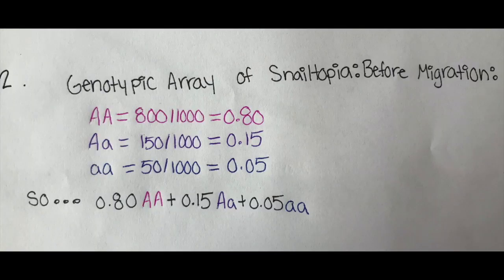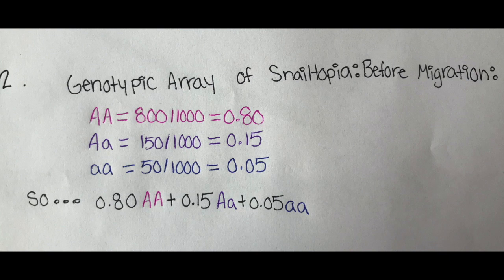Next, we'll find the genotypic array of Snail-topia. To do this, we will take the number of snails of each genotype and divide them by the total number of snails in Snail-topia.